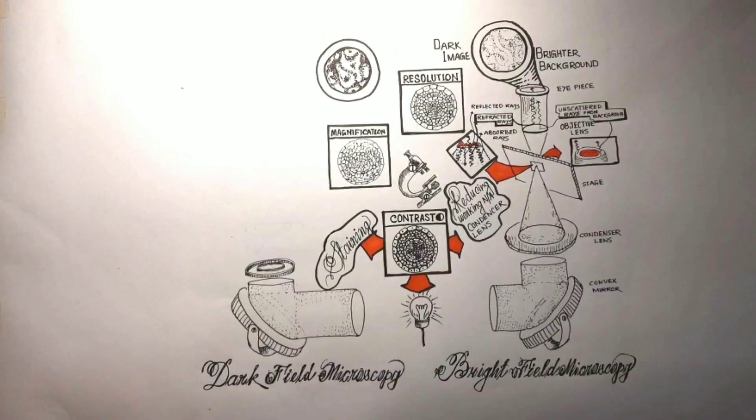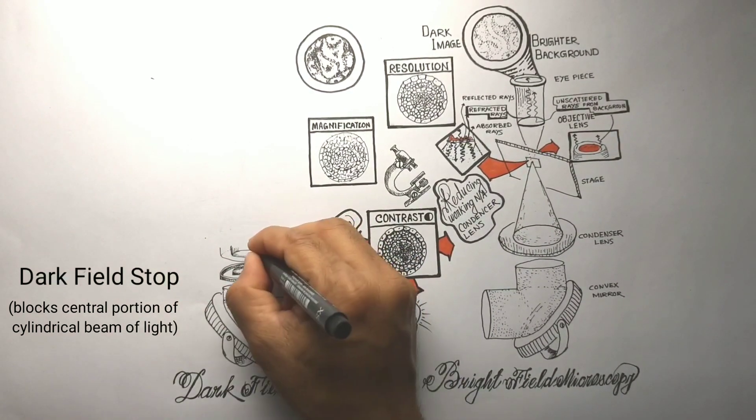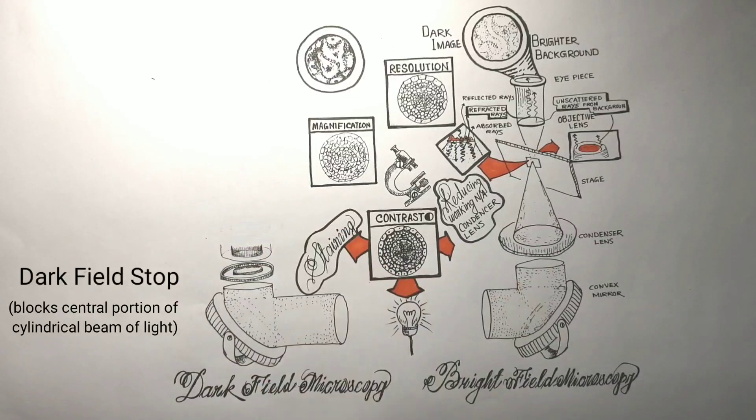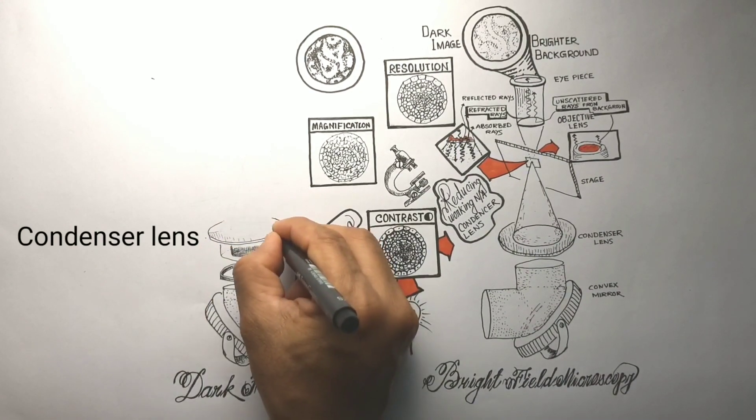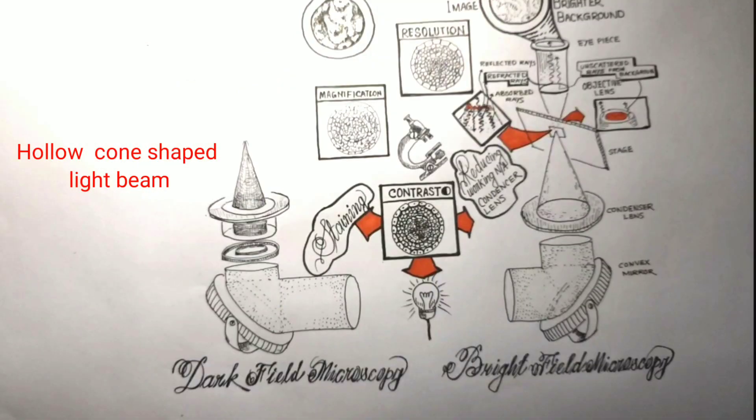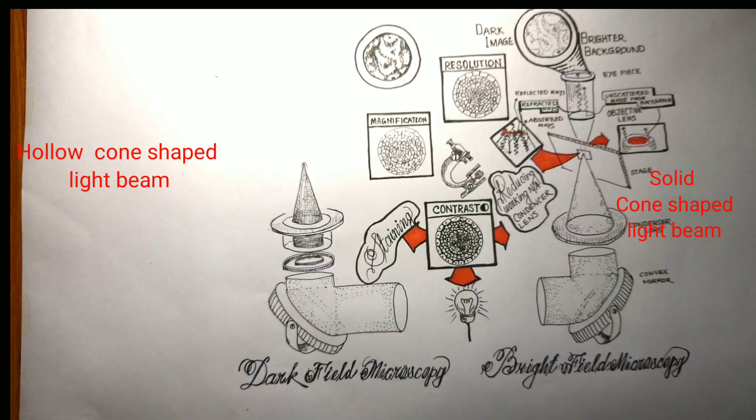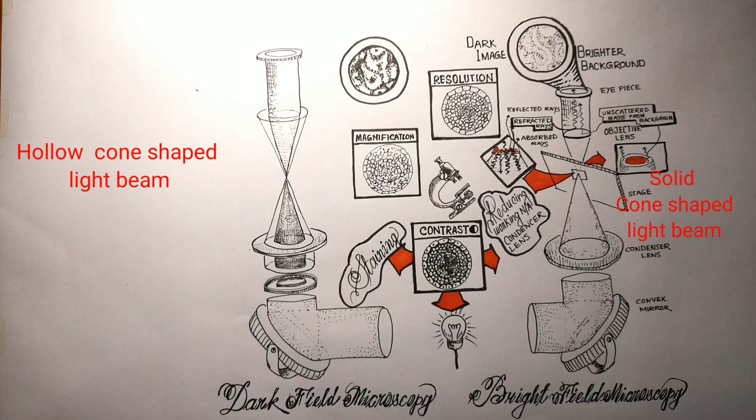In this technique, a disc-like dark field patch stop is used before the condenser lens. The stop blocks the central portion of light from the source and leaves only a hollow cylindrical shape of light beam with a circular layer of illumination. The condenser lens collects this and focuses it onto the sample. Unlike bright field technique where a light-filled solid cone was focused onto the sample, in dark field the condenser focuses a hollow cone of light onto the sample.